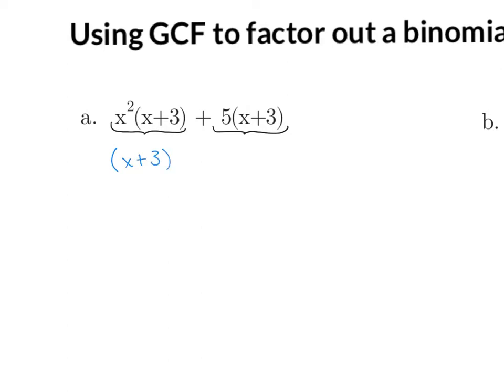We said x plus 3. Inside, I want to put each term without the common factor. So in the first term, if I get rid of the common factor x plus 3, what am I left with? I am left with x squared. In the second term, if I get rid of the x plus 3 because I factored it out, I am left with plus 5. And we are done.